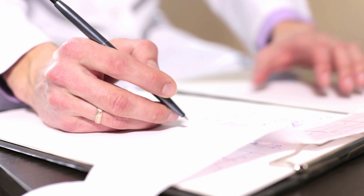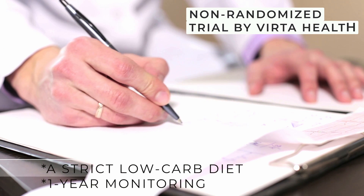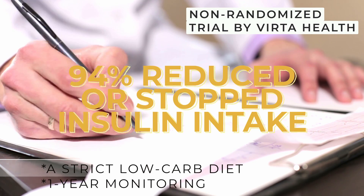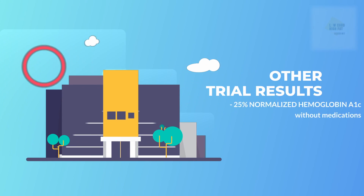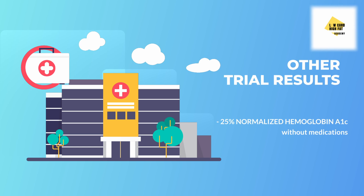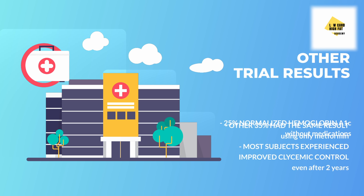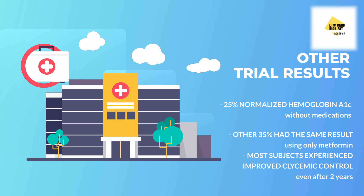A non-randomized trial from Virta Health showed that following a very low-carbohydrate diet with remote monitoring by healthcare professionals for a year resulted in 94% of the low-carb group reducing or stopping their insulin use. Moreover, 25% of the group had an HbA1c reading in the normal range without taking any medication, indicating remission of their disease. An additional 35% achieved the same results using only metformin, and the majority continued to show sustained improvement in glycemic control after two years.